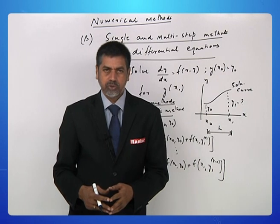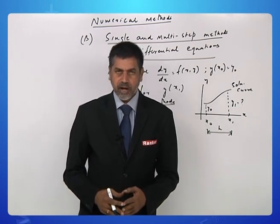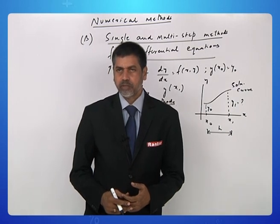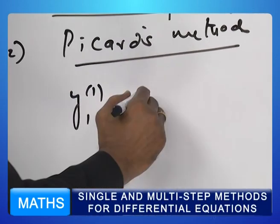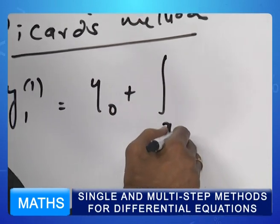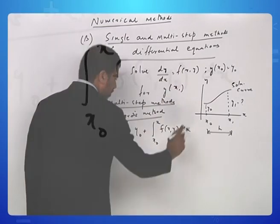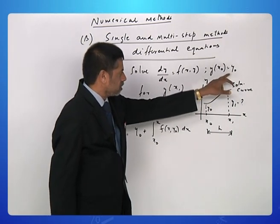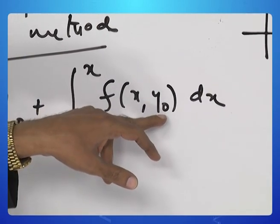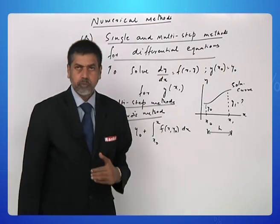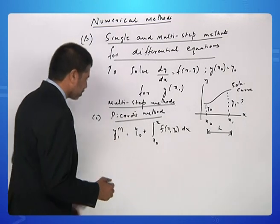Let us go to the next multi-step method known as Picard's method. Picard's method is iterative and it approaches the estimation through the process of integration. y1 first approximation is y naught plus integral x naught to x of f of x comma y naught dx. y naught is a numerical value which comes from the initial condition. You can integrate f of x comma y naught because this is a constant. You get a polynomial or a function of x as y1 first approximation.